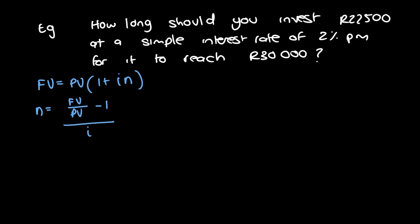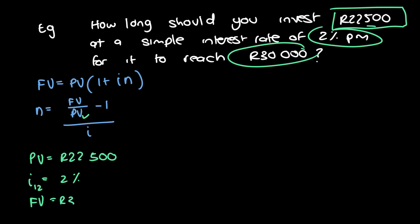And now we're going to just read the information to see if we can fill everything up without requiring any additional information or any secondary formulas. So the first thing that we look at is how long should you invest 22,500—so the 22,500, that is our present value. At a simple interest rate of 2% per month, so we have i is equal to 2% per month. And remember, we like to put the subscript as what it is actually representing. So we have i sub 12 over there. Next up, it says for it to reach 30,000. So we have the future value is equal to 30,000.